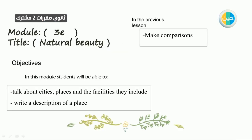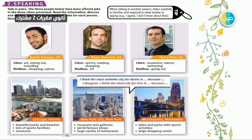In the previous lesson we made some comparisons using different kinds of nouns and adjectives. In this module, students will be able to talk about cities, places, and the facilities they include. We're going to write a description of a place — in this case, one of the Saudi cities.